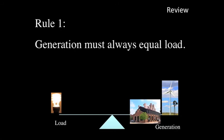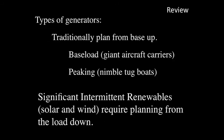So let's review. There's one rule: generation must always equal load. There are a number of different types of generators. Traditionally, we work from the base up with a baseload power plant and a peaking power plant. If you introduce lots of renewables into the system, you can't work from the base up — you have to work from the load down, taking away the actual renewables generating at that point in time and making up the rest with nimble power plants like natural gas.